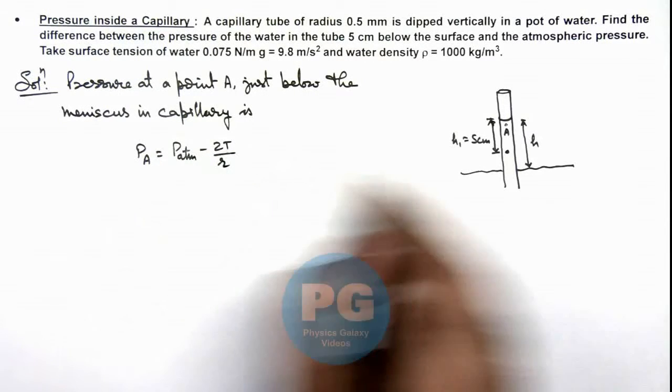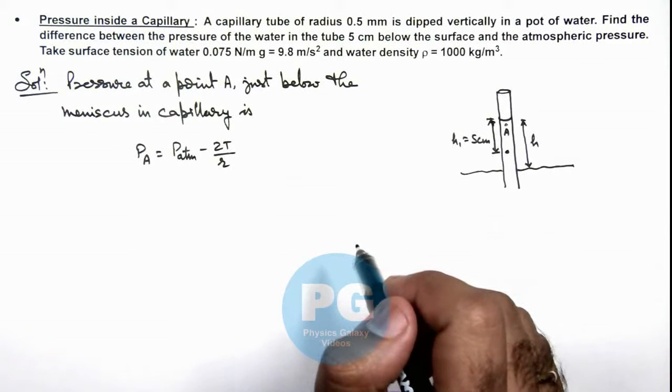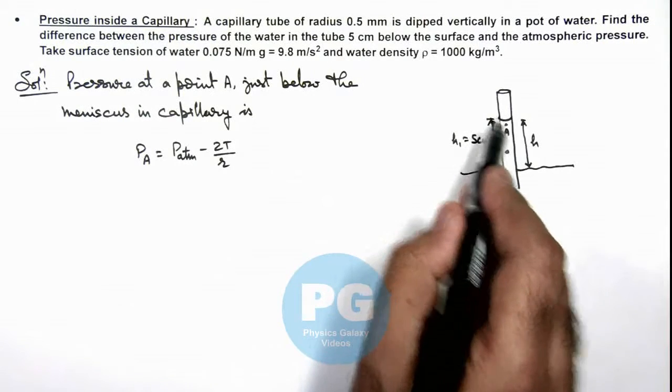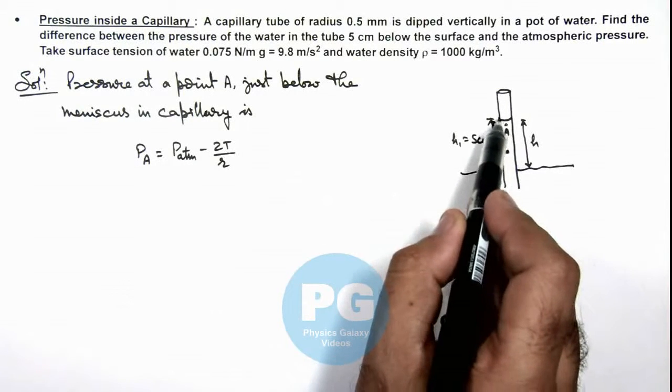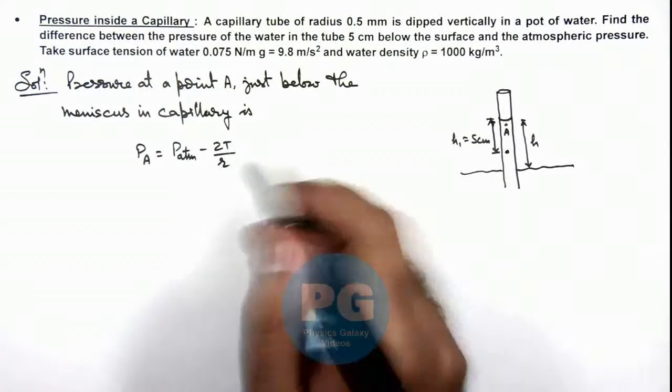And we know in case of water-glass capillary combination, we can consider the angle of contact to be zero, and radius of tube can be taken as radius of curvature only.